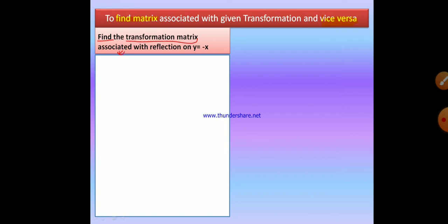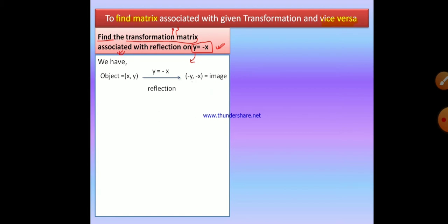Today we are going to discuss how to find the matrix associated with a given transformation, and vice versa — if the matrix is mentioned, how to find the transformation. Let's discuss the first type. We need to find the transformation matrix equivalent to reflection on y equals to minus x. Here the transformation is given, and we need to find the equivalent transformation matrix. First we need to write the formula in terms of coordinates: if x comma y is an object, its image under reflection on y equals to minus x is minus y comma minus x.